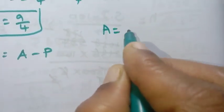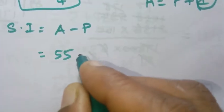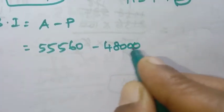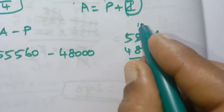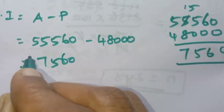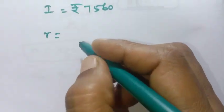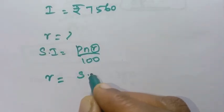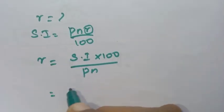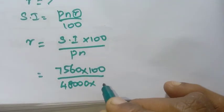Simple interest = A minus P = 55,560 minus 48,000 = Rs.7,560. Now using the formula, R = SI into 100 by PN. SI is 7,560 into 100, principal is 48,000 and N is 9 by 4.